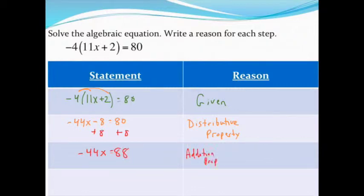As I continue to solve this equation, I have -44x - 8 = 80, so I'll add 8 to both sides. Because I added, I'm going to call this the addition property. And finally, to get rid of the -44 that's being multiplied by x, divide both sides by -44 to get my final answer. My reason that I know that final answer is true is because of the division property.